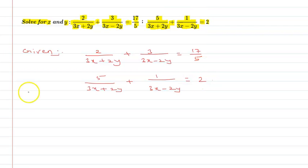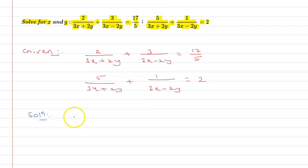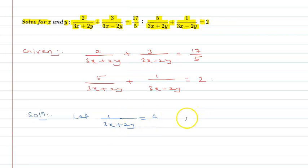If we look at these equations, the variable is in the denominator. The expression 3x + 2y repeats in both equations, and so does 3x - 2y. So let us substitute: let 1 upon (3x + 2y) equal to a, and 1 upon (3x - 2y) equal to b.